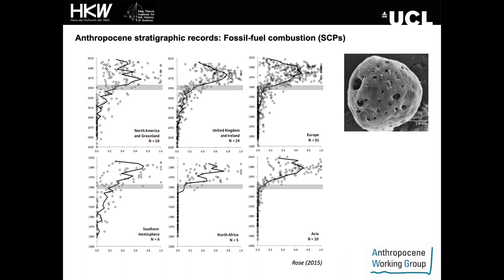If we look at sediment sequences deposited in the last couple of centuries, we can also see the particular chemical signatures of fossil fuel emissions from the industrial revolution onwards. We can observe this with global sediment records of particles formed only by high temperature coal and oil combustion — for example, spheroidal carbonaceous particles shown here. These are transported in the atmosphere and deposited into lakes and seas worldwide. This slide shows a compilation of SCP accumulation records from lakes around the world. In these independently dated sediment cores, we see their occurrence first in the mid to late 19th century, a variable increase in the early 20th century, and rapidly from the mid-20th century.